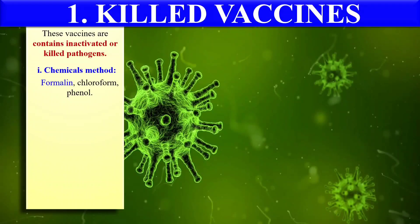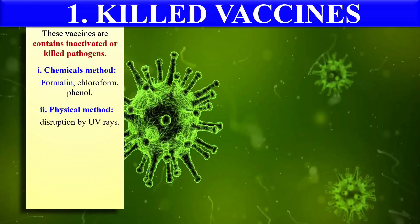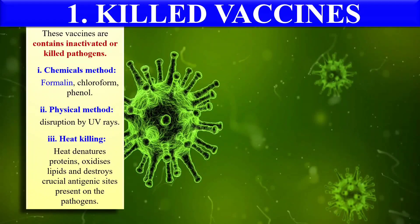How can we make killed vaccines? We generally kill the pathogen by various ways. First, the chemical method — we can treat the pathogen with certain chemicals like formalin, chloroform, or phenol, which ultimately inactivate or kill the pathogen. Secondly, we can use a physical method like UV rays to inactivate the pathogens. We can also apply heat treatment, known as heat killing, where we treat the pathogen with heat, which denatures the proteins, oxidizes the lipids, and destroys the antigenic sites present on the pathogen.